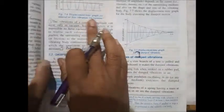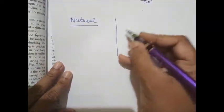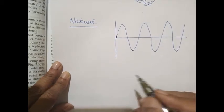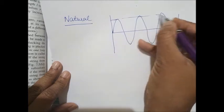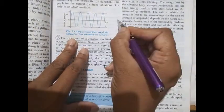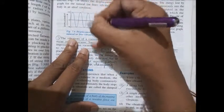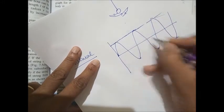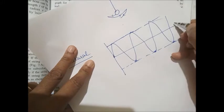If you see the displacement-time graph for a natural vibration, it will be like a wave with constant amplitude and frequency — that is called natural vibration. Draw dotted lines first so your amplitude always remains the same, then draw the wave. That will help you get an exact displacement-time diagram.